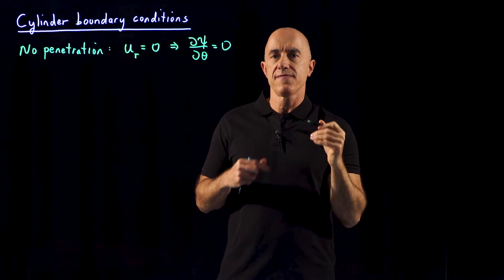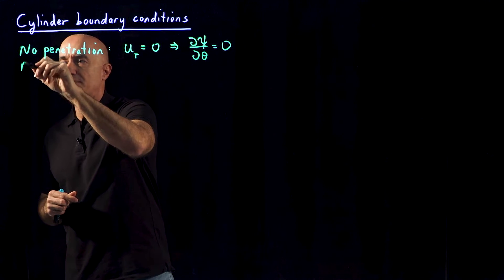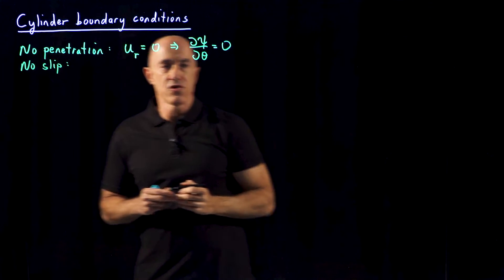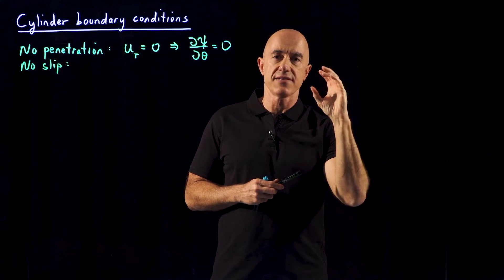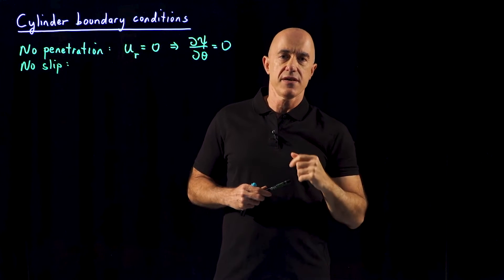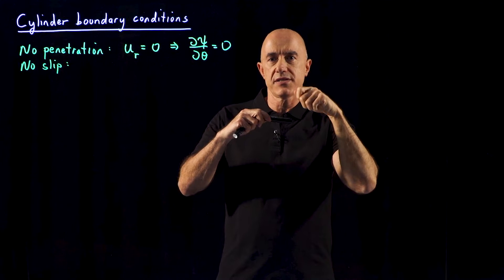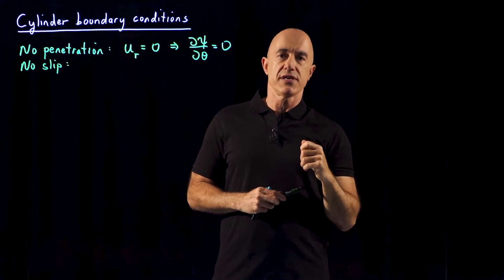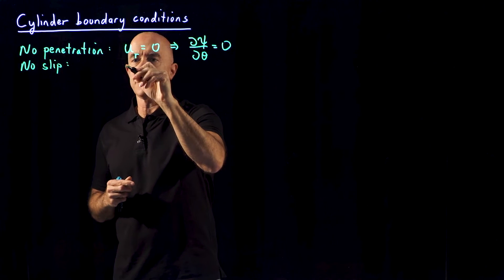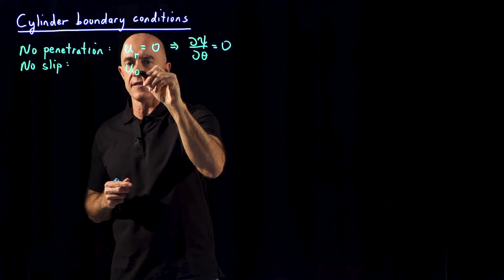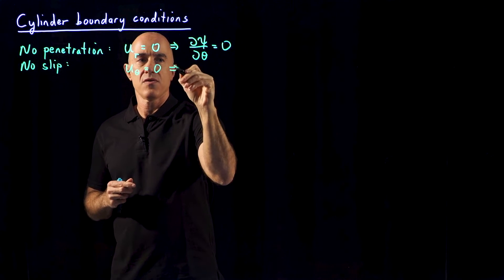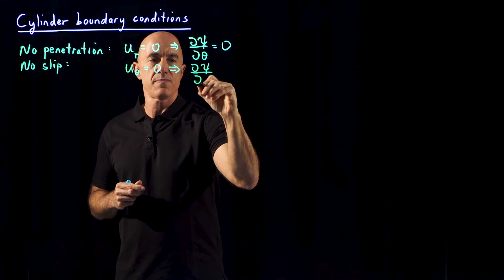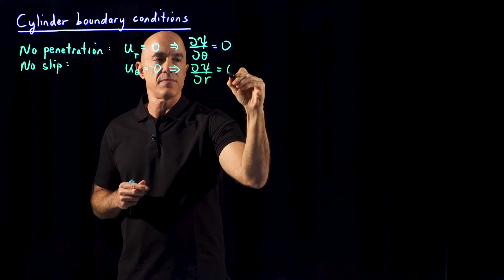The second physical principle is called the no slip condition. For no slip, the cylinder has some friction associated with it, so if the fluid is touching the cylinder, it can't be moving along the direction of the cylinder. That translates into u in the theta direction having to be zero, which for the stream function means the partial of the stream function with respect to r has to be equal to zero.